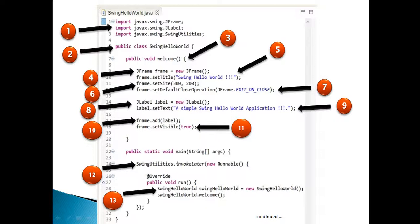Moving ahead. Step 10, in order to show label on the frame, call add method of JFrame and pass the label instance to it. It will create a frame with a label attached to it.